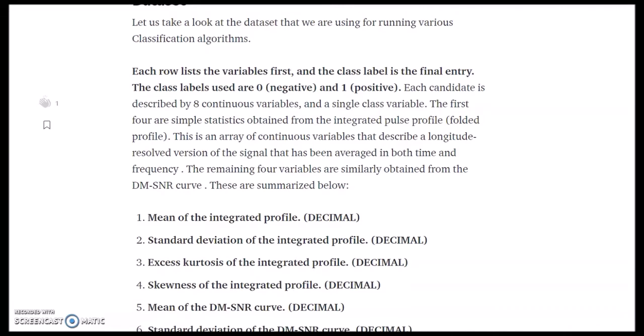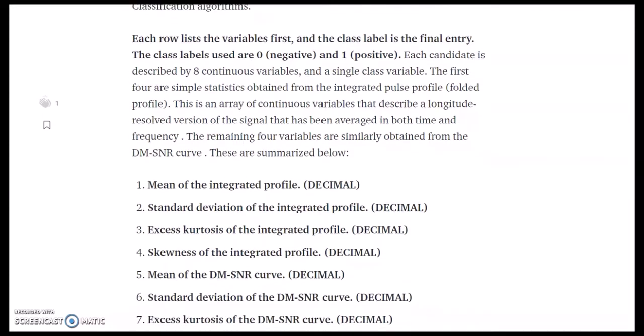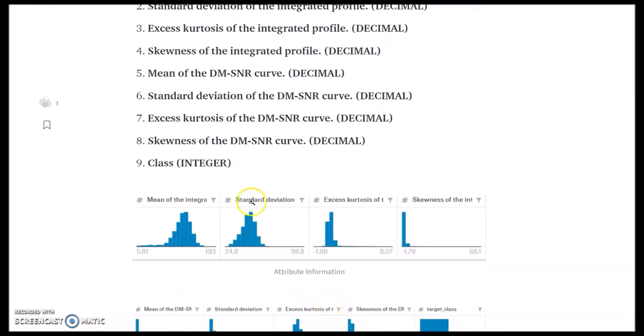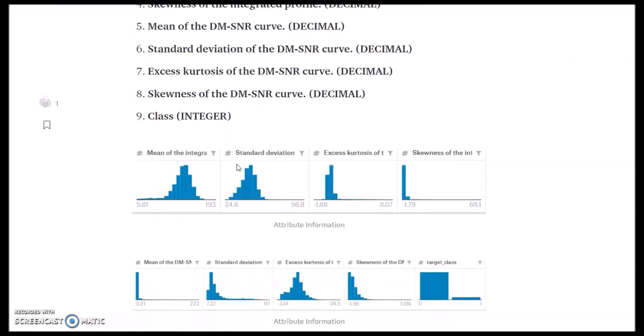The first four are simple statistics obtained from the integrated pulse profile. It is an array of continuous variables that describe a longitude-resolved version of the signal that has been averaged in both time and frequency. The remaining four variables are similarly obtained from the dispersion medium signal-to-noise ratio curve. These attributes are of decimal data type and the class is of integer binary data type: 0 for negative and 1 for positive.